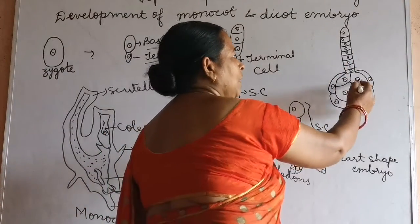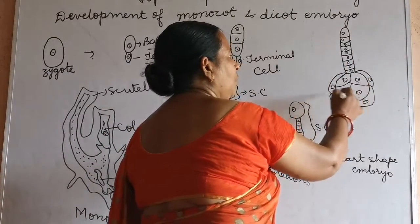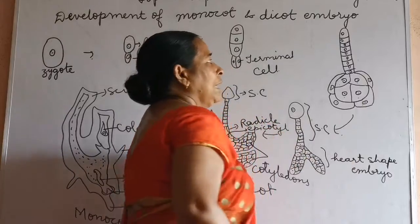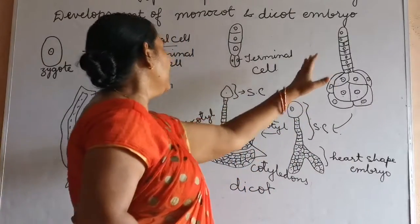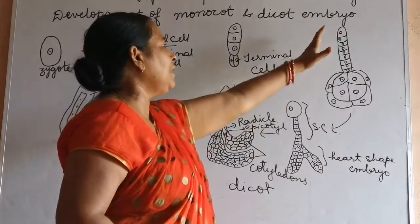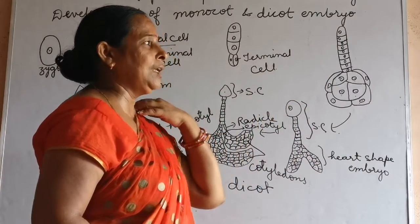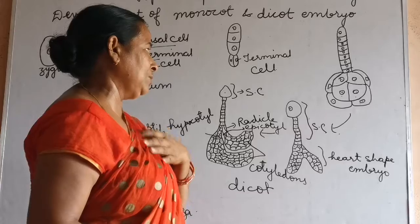Octate means 8 cells — 1, 2, 3, 4, 5, 6, 7, 8. And the basal cell will divide mitotically to provide nutrition.